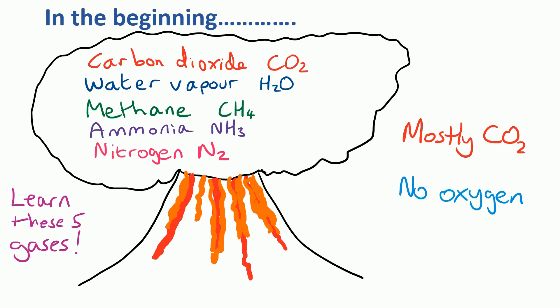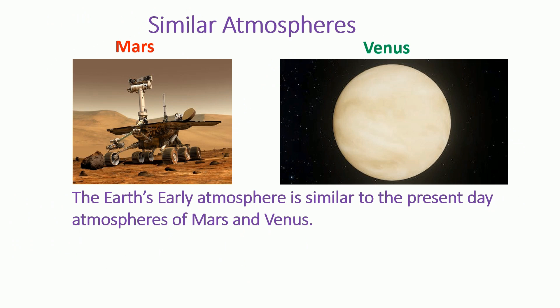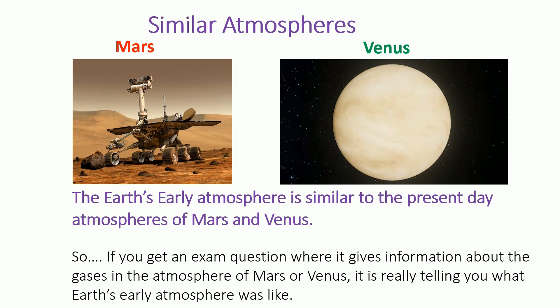When we look at the present day atmosphere on Mars and Venus, it's very similar to that early atmosphere on earth that we've just been talking about, and often they refer to this in an exam question. So if you get an exam question where it gives information — it might be a table of gases — about the gases in the atmosphere of Mars or Venus, it's really telling you what the earth's early atmosphere was like.